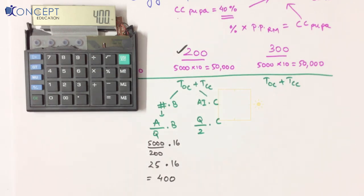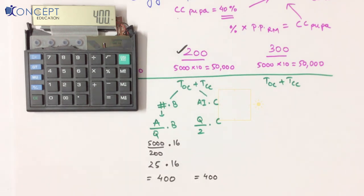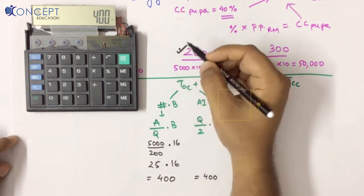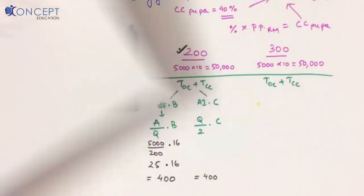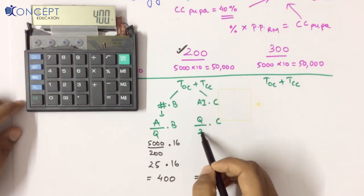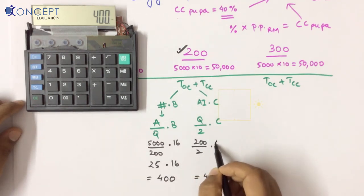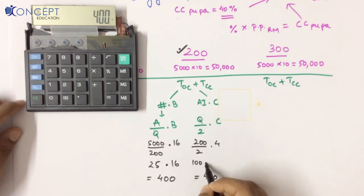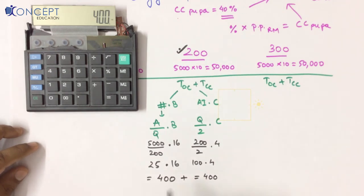Those who have seen the ranker approach already know the total carrying cost, because when ordering as per the EOQ formula, total ordering cost equals total carrying cost — that is the basis from the graph where the two lines meet. Average inventory = 200 ÷ 2 = 100. Carrying cost = 100 × C = 100 × 4 = ₹400. So total associated cost = ₹400 + ₹400 = ₹800.